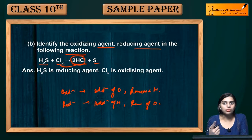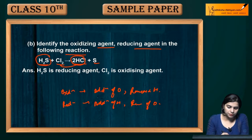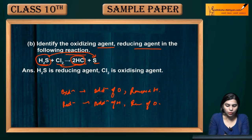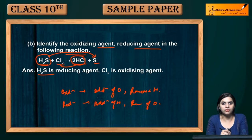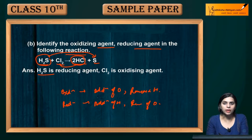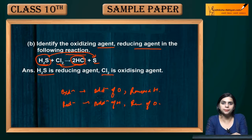Where is hydrogen removed? From H₂S. So H₂S undergoes oxidation, making it the reducing agent. Cl₂ undergoes reduction — hydrogen has been added to chlorine — so Cl₂ is the oxidizing agent.